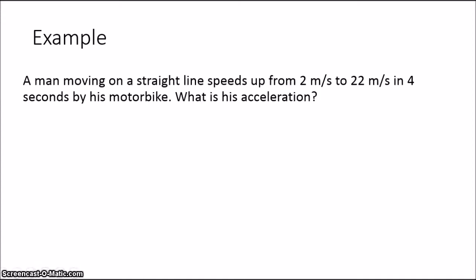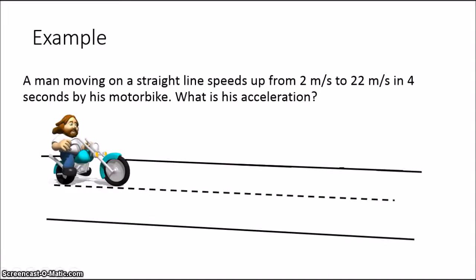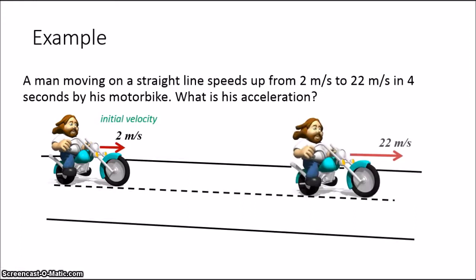Let's see how we use this formula on a problem. In this problem, there is a man moving on a straight line, and he will speed up from 2 meters per second to 22 meters per second in 4 seconds. Basically, his initial velocity is 2 meters per second, and his final velocity is 22 meters per second after 4 seconds.